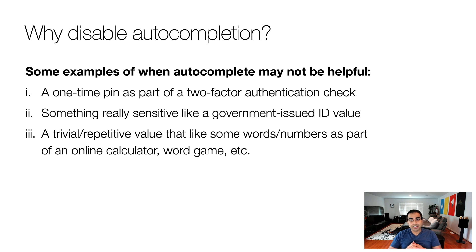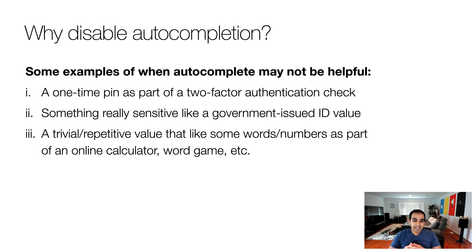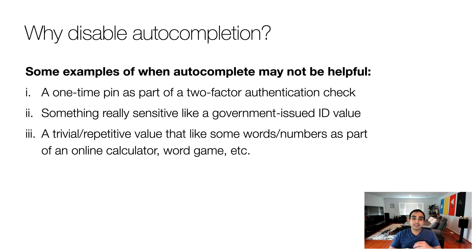Other times, maybe something really sensitive, like a government-issued ID value — like your social security number or your driver's license number. These are things that even though autocomplete is tied to your profile and there's some security behind it, you may not want to cache that. You may want someone to enter that every single time. And storing that and showing it to the user may end up slowing them down or frustrating them.